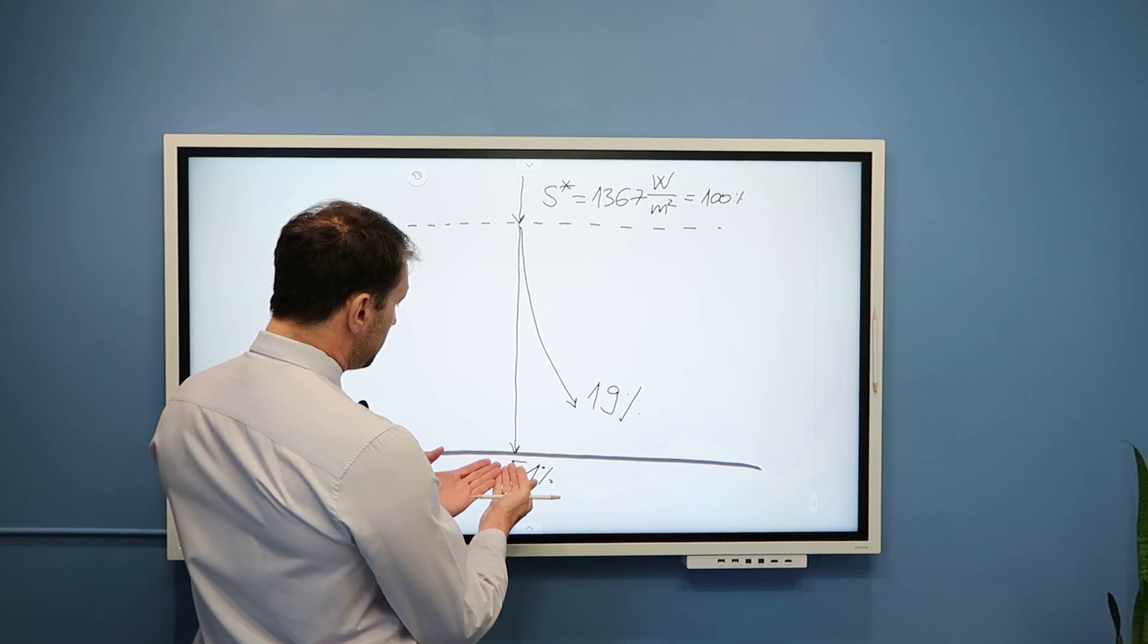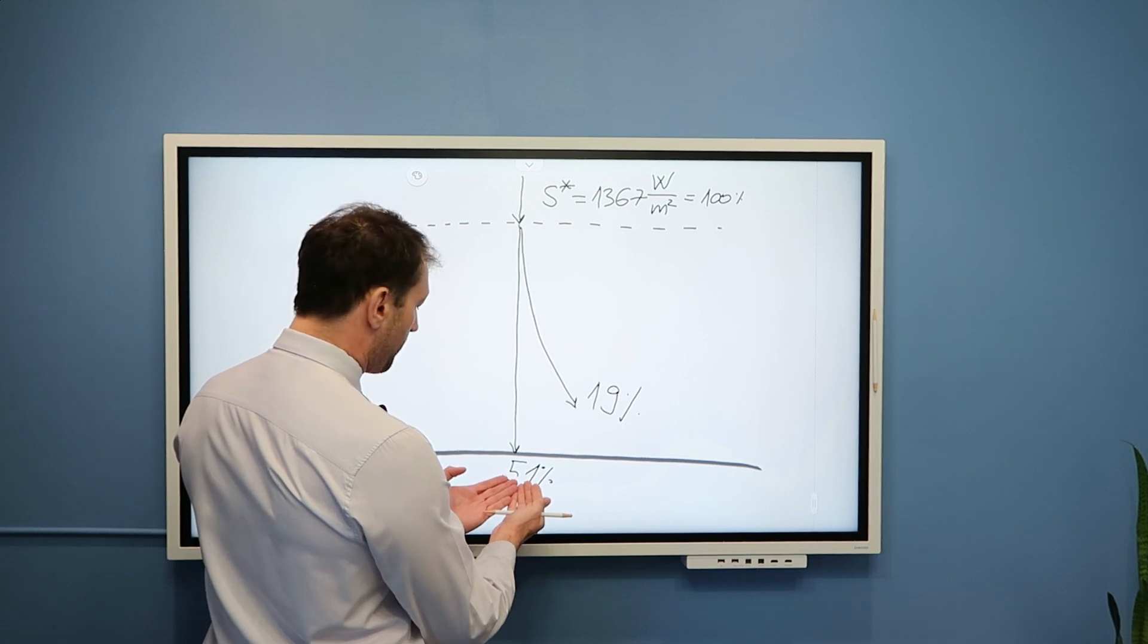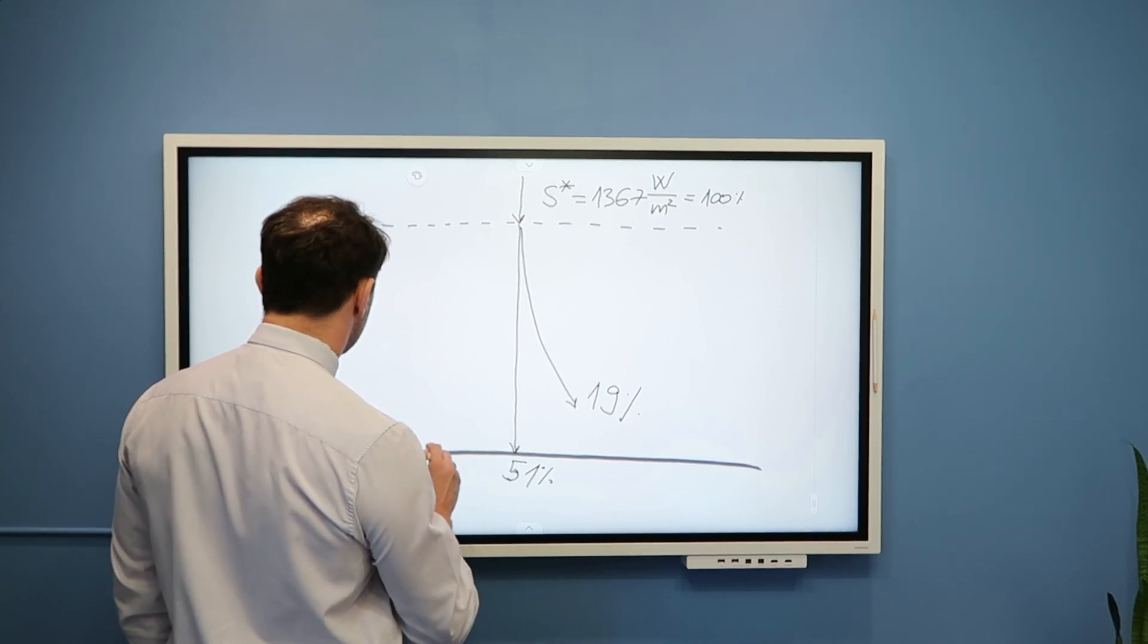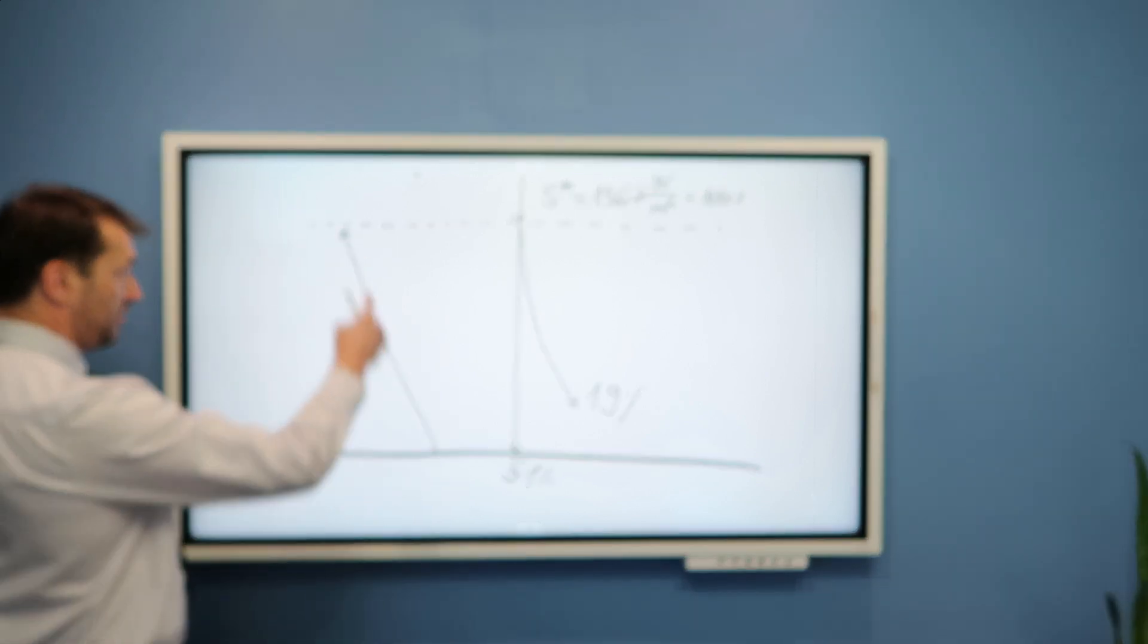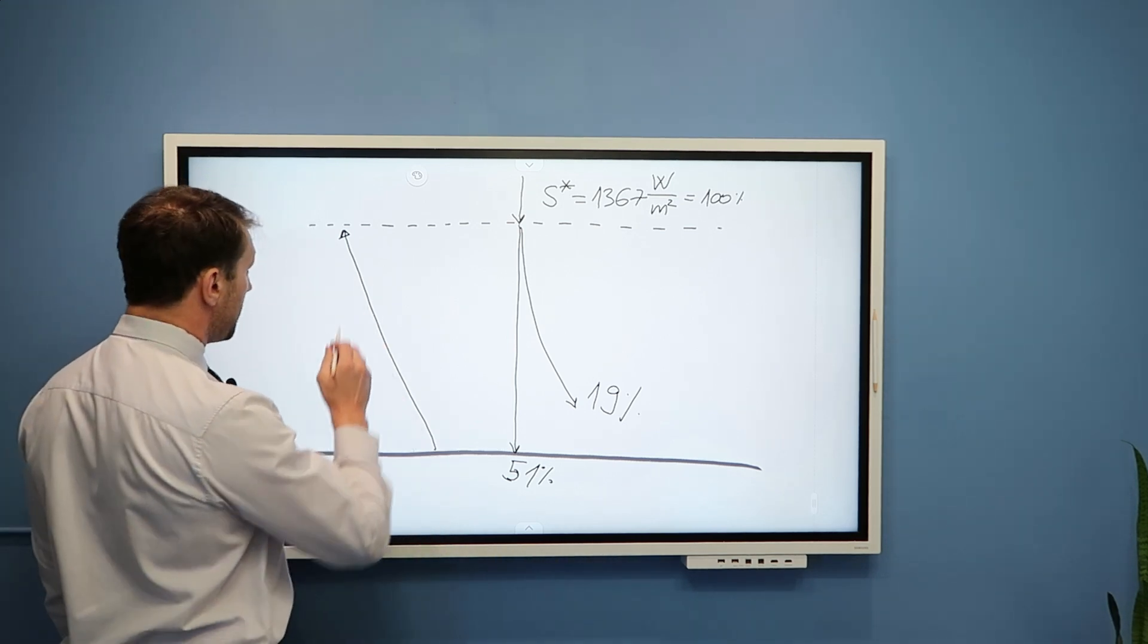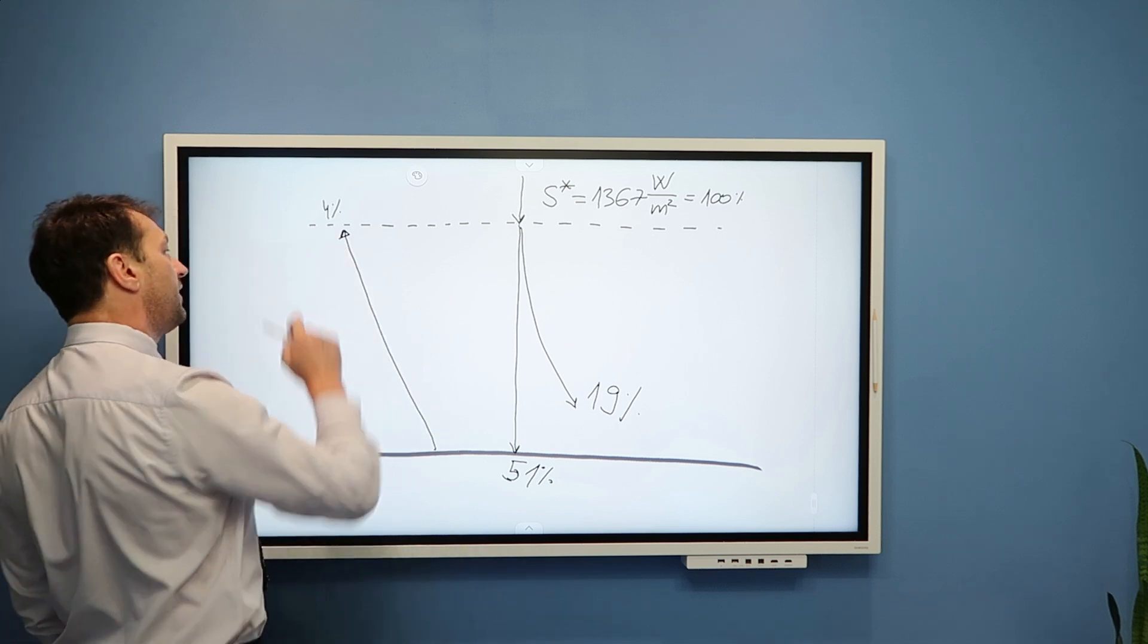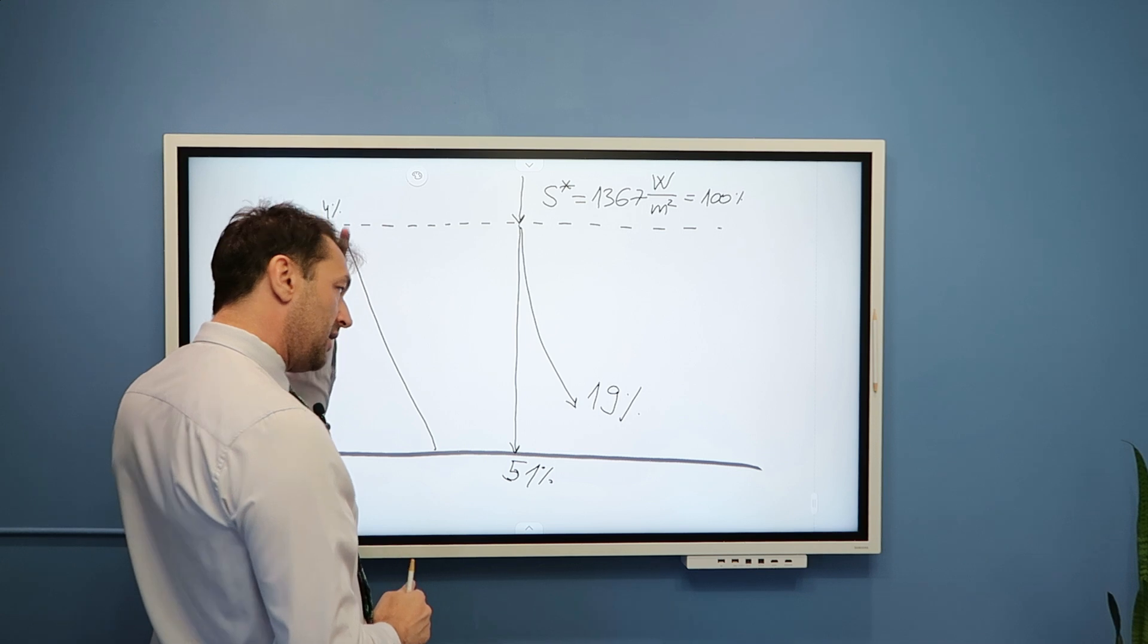Now, this radiation that reaches the surface doesn't necessarily have to be absorbed by the surface. Part of radiation that reaches the surface can also be reflected from the surface into the outer space. And this is a small amount of radiation, only approximately 4% is coming down to the surface and then being reflected from the surface, does not interact with the atmosphere, but rather goes into the outer space.